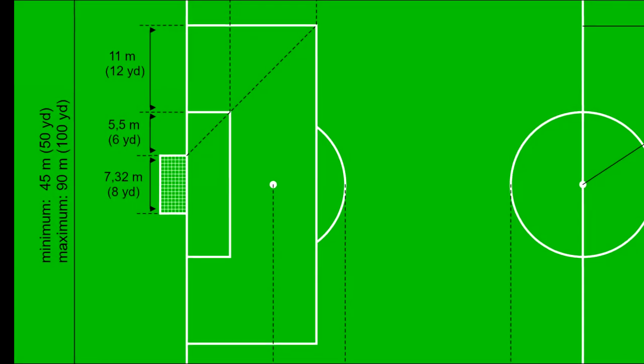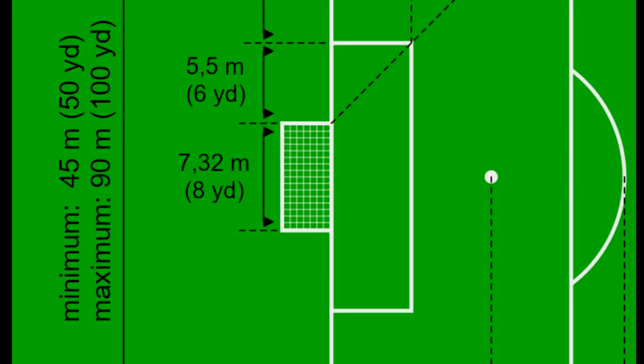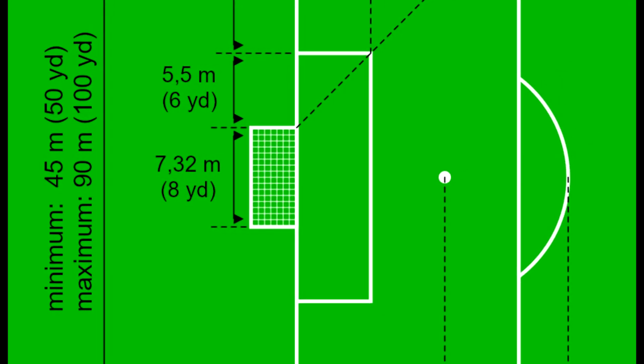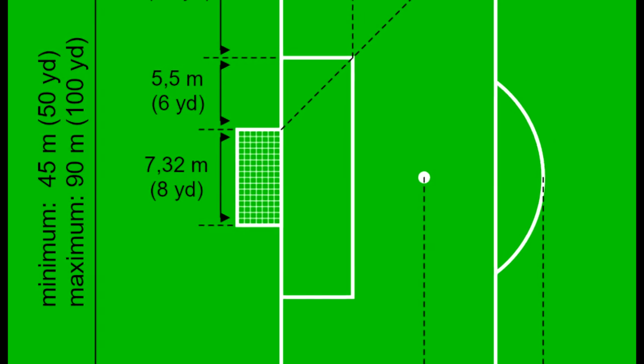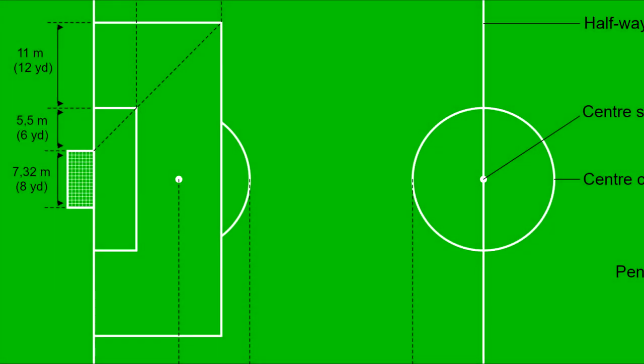There are two white rectangles on the pitch near the goal. The smaller one is the goal area, extending six yards from either goal post and six yards onto the field. The larger rectangle is the penalty area, sometimes known as the box. The penalty area stretches 18 yards from either goal post, then 18 yards onto the field.